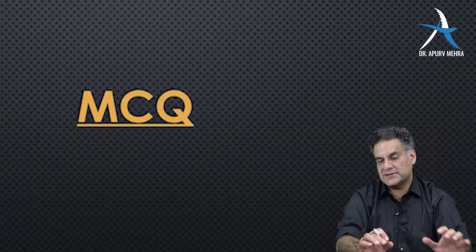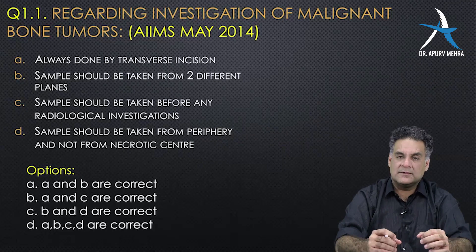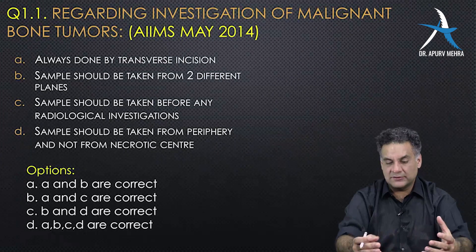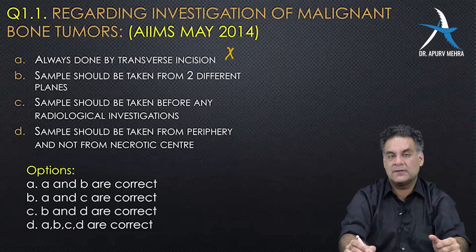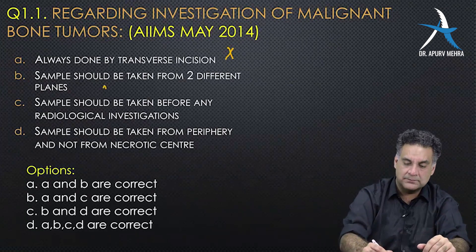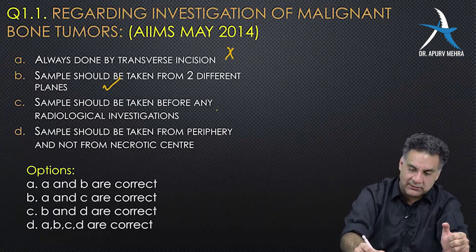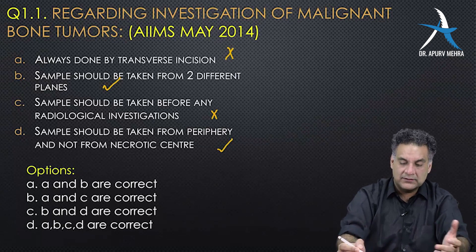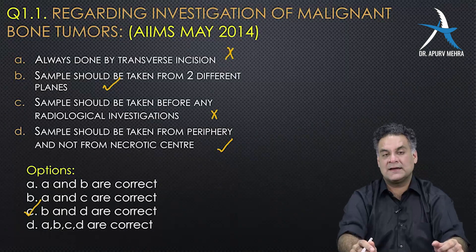Let's do some questions to understand what we have done regarding investigation of malignant bone tumors. For biopsy, you take a vertical incision. Sample should be taken from two different planes — true. Sample should be taken before investigation — false. Sample should be taken from periphery — true. So options B and D are correct.